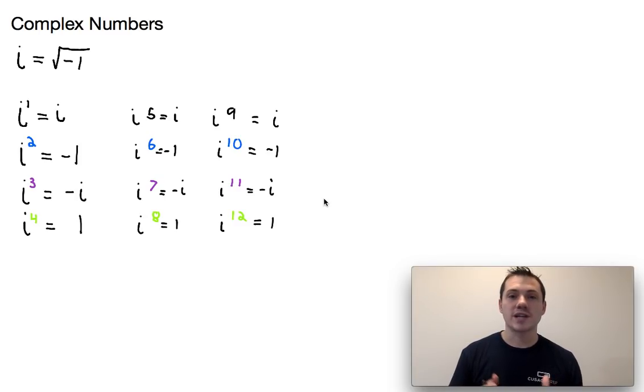So for starters, complex numbers, as you might remember from Algebra 1 or Algebra 2 course, is just anything where you're taking the square root of a negative. You can take the negative out of the square root by taking an i out of the square root. In other words, i is just equal to the square root of negative 1, as we can see right here.